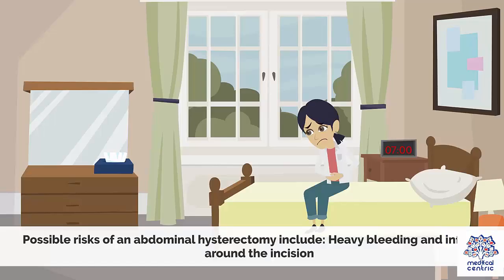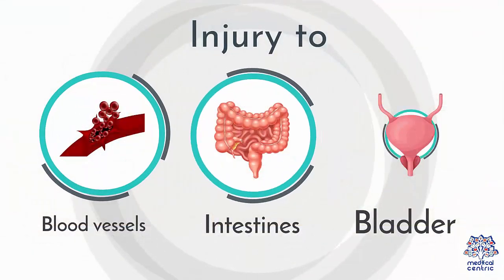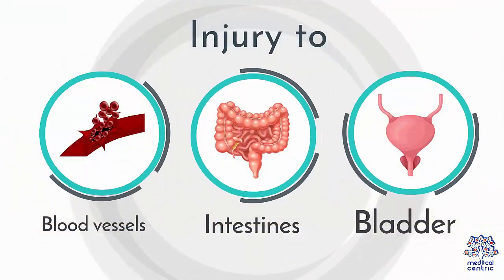Risks. Possible risks of an abdominal hysterectomy include: heavy bleeding and infection around the incision, injury to blood vessels, intestines, and bladder, and adverse reactions to the administered anesthetic.